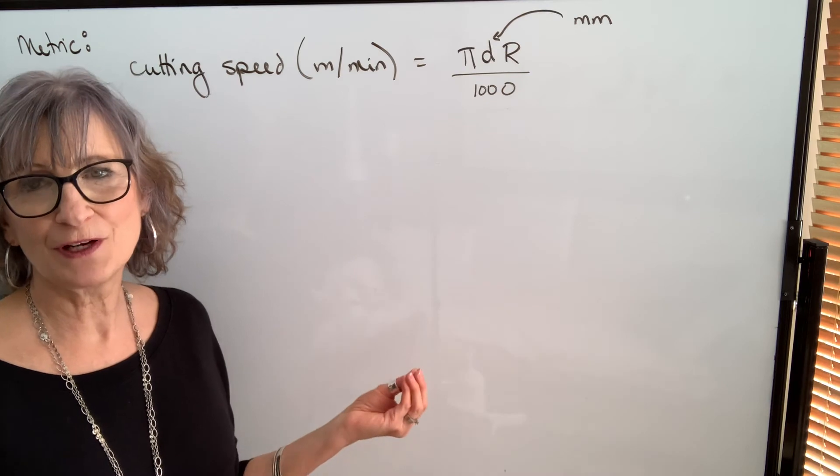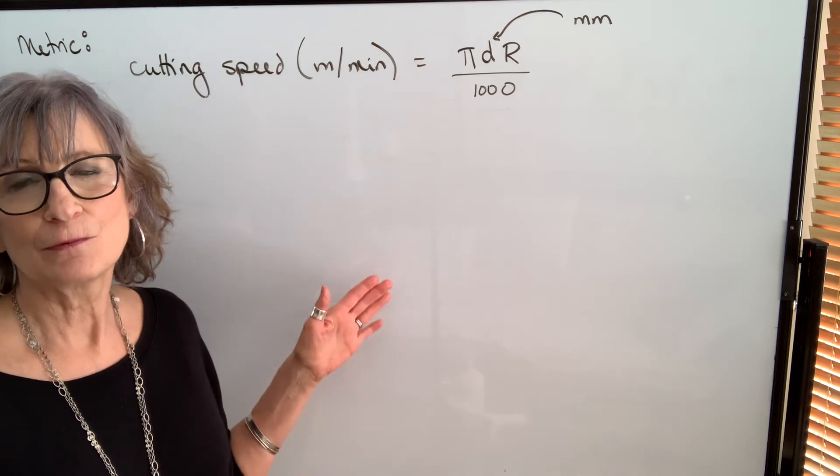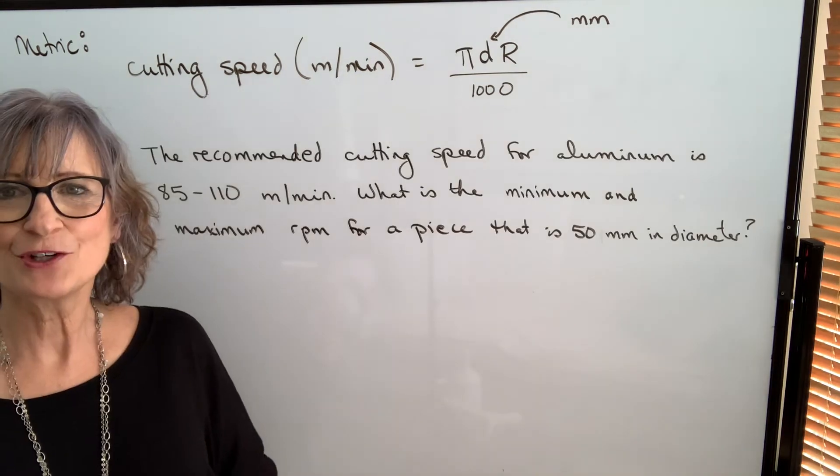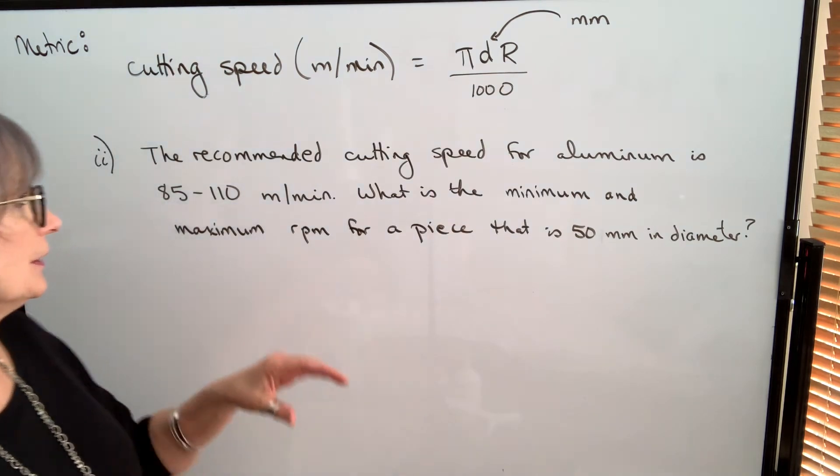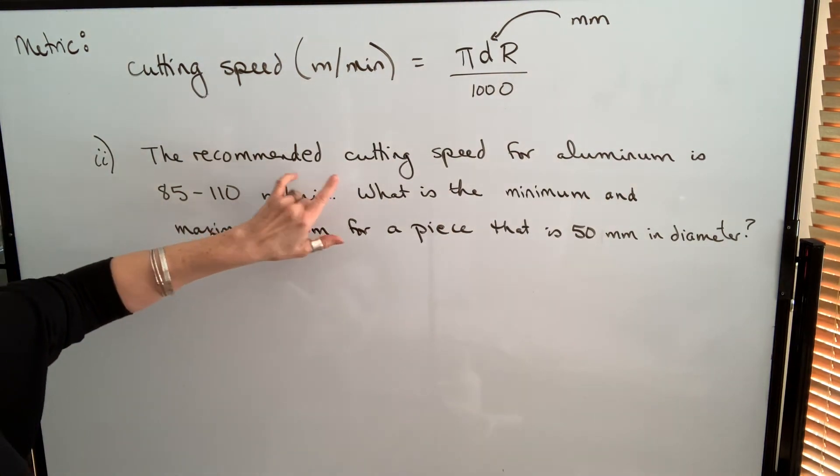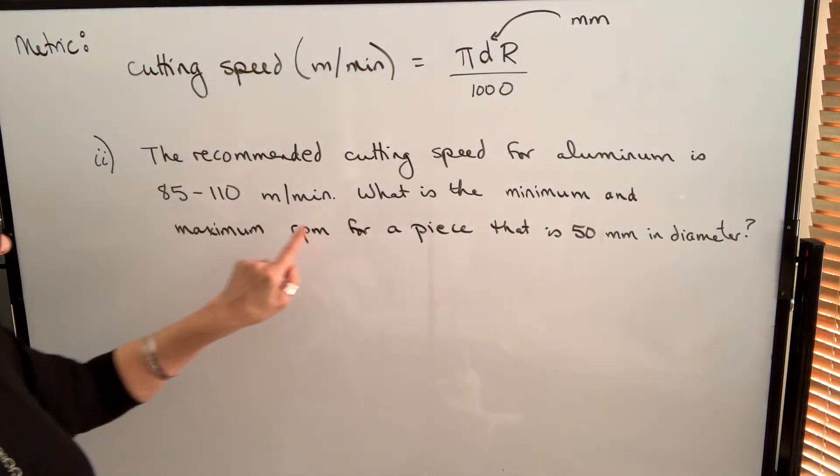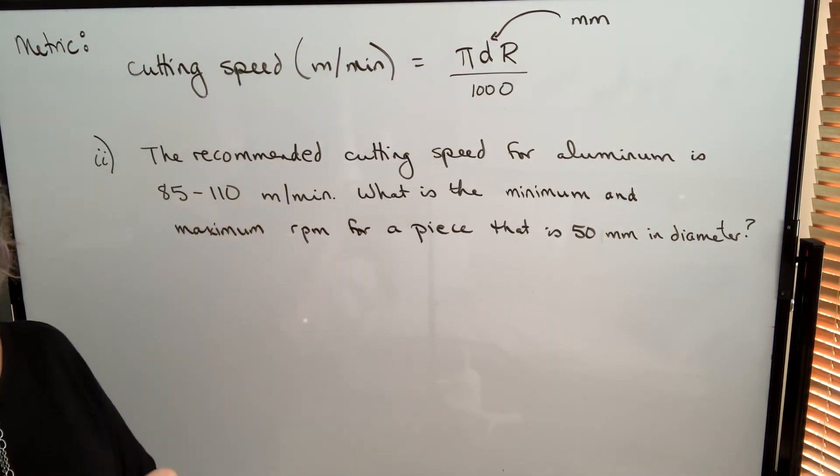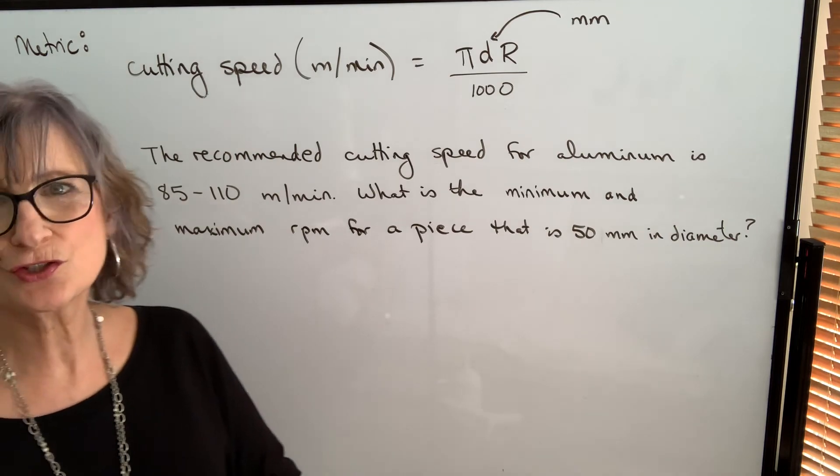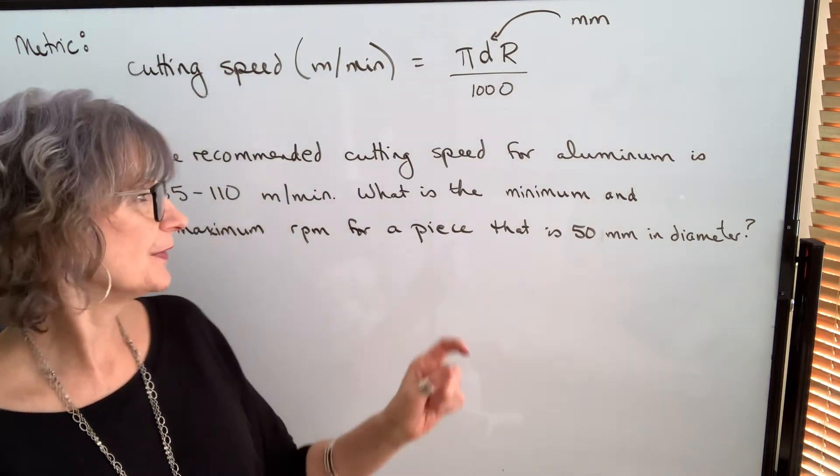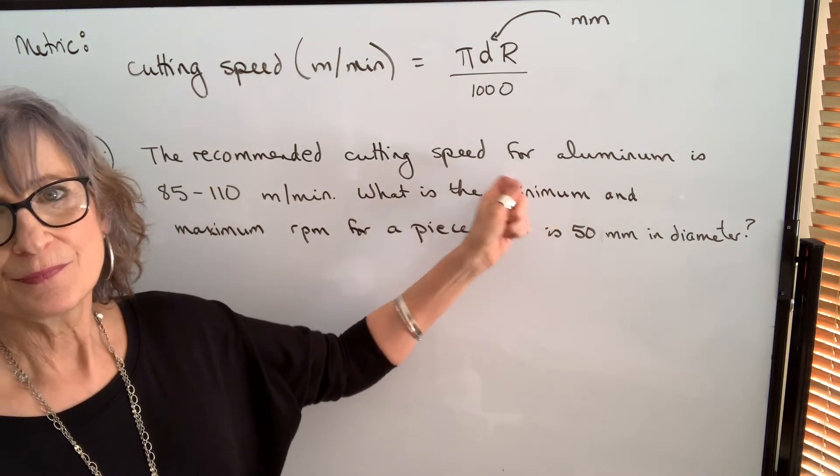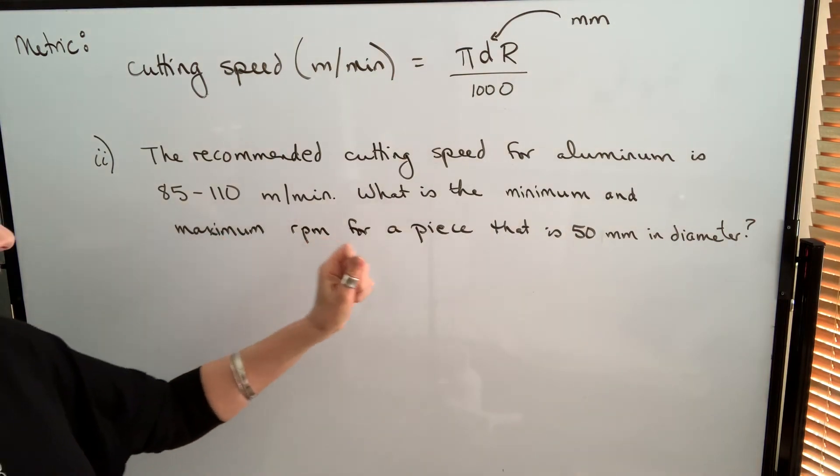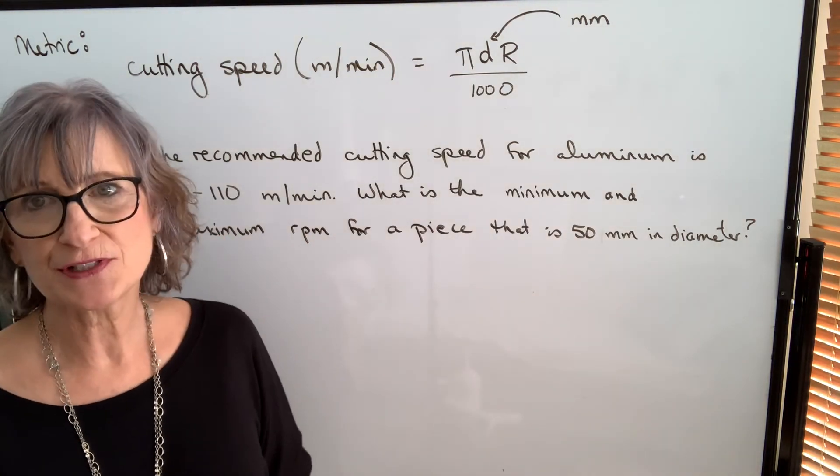Let's do an example where we're finding RPM in metric units. Very similar question to the previous one. We have the recommended cutting speed, this time for aluminum, is 85 to 110 meters per minute. So we have a range, which means we have a range for our RPM. We want to know the minimum and the maximum RPM for a piece that's 50 millimeters in diameter.